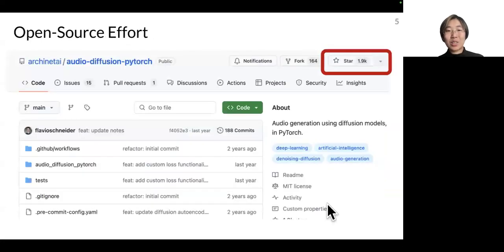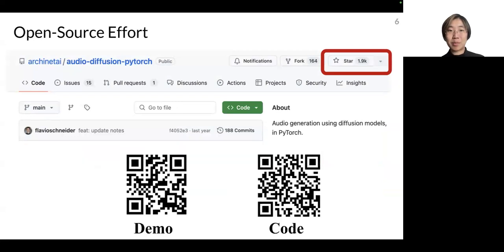Apart from listening to the music, you can also check out our open source code at Audio Diffusion PyTorch GitHub repo, which already received a lot of attention. You can check out both the demo and the code in the following QR.